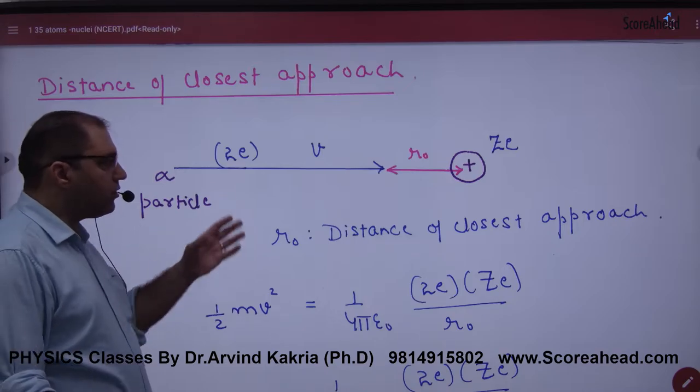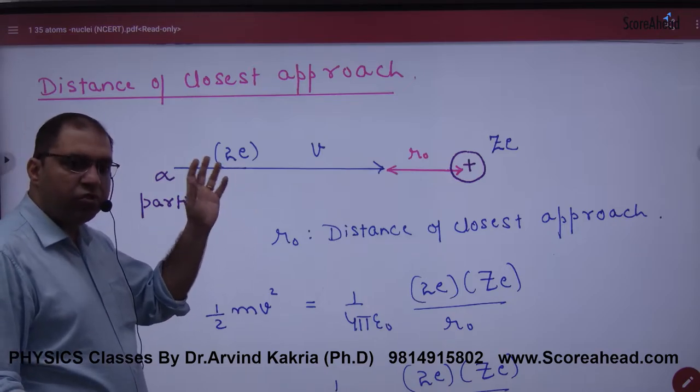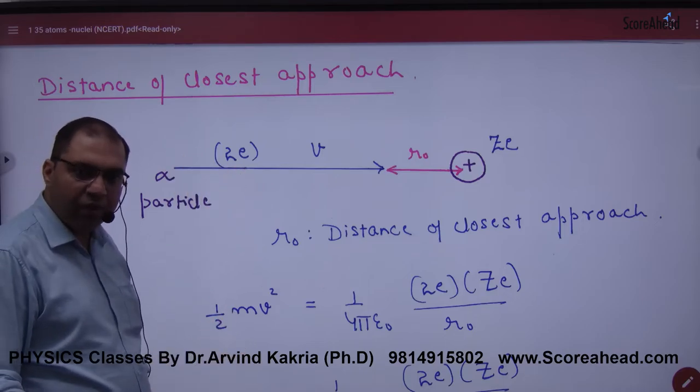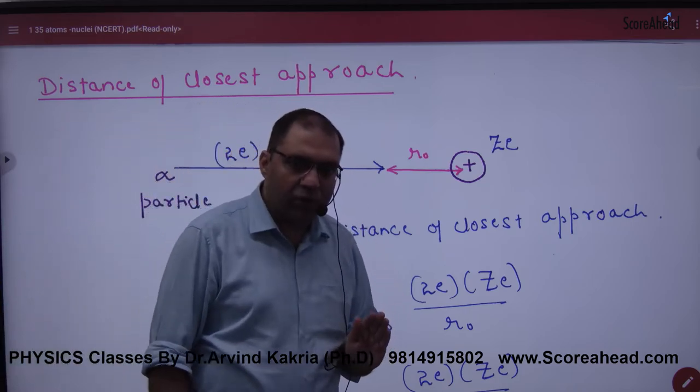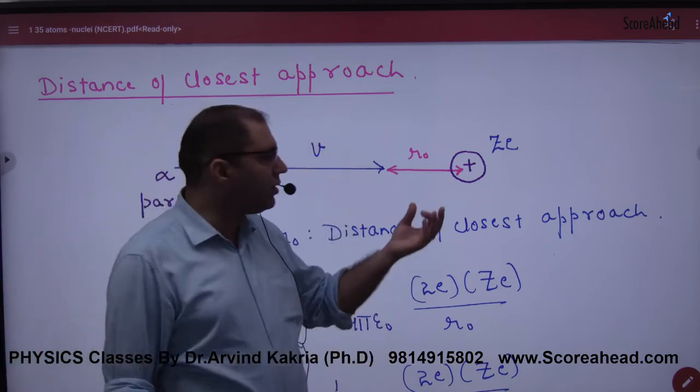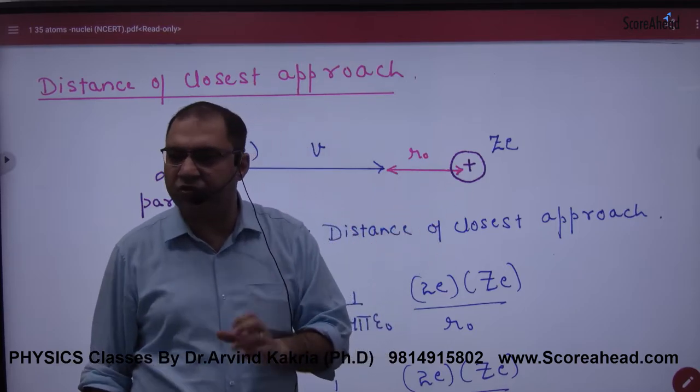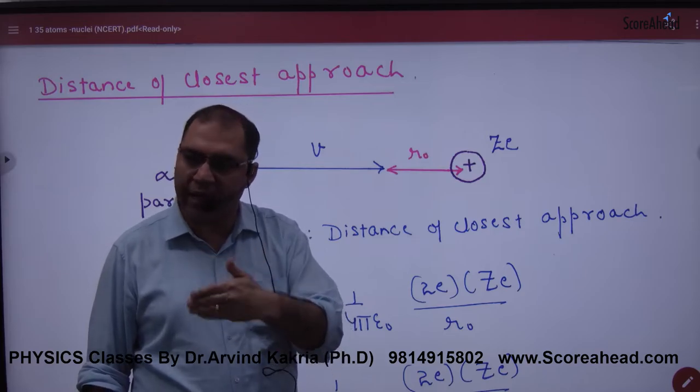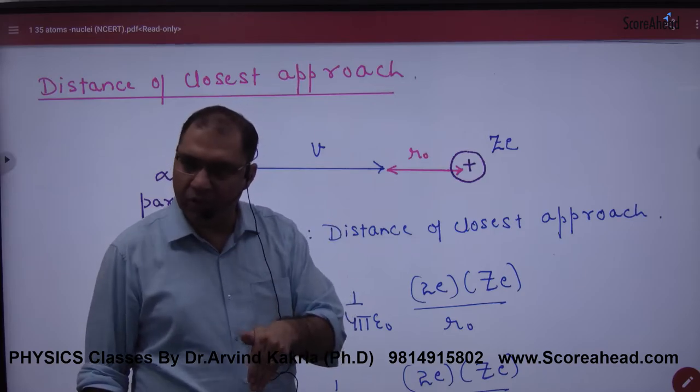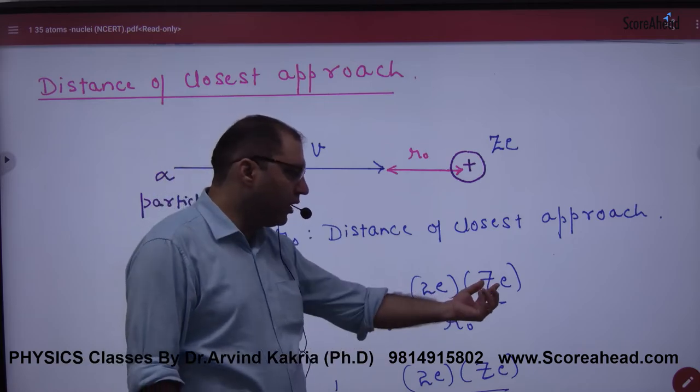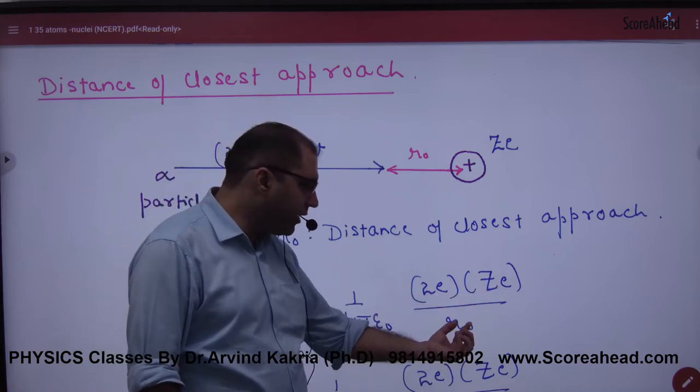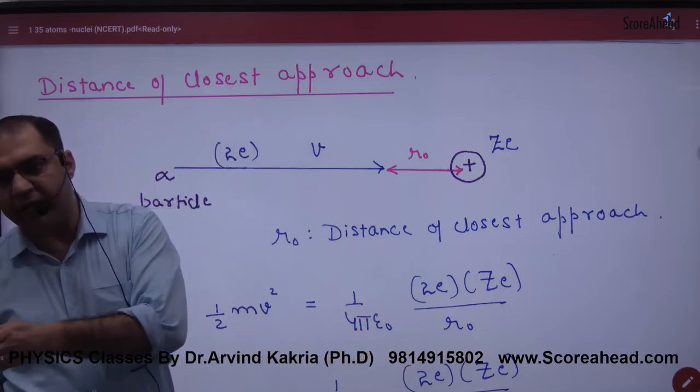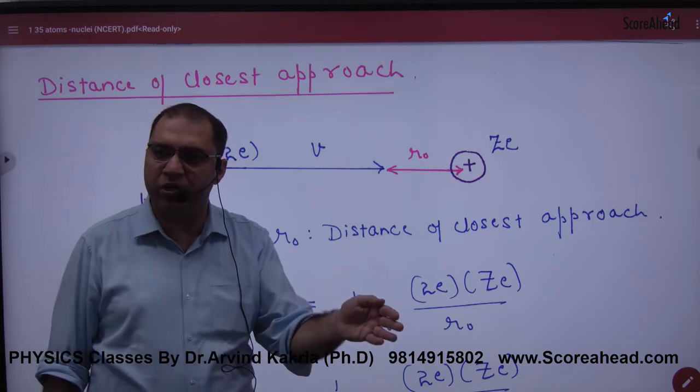How much value is coming? When some alpha particle comes with kinetic energy, which is half mv square. So when it comes here, it stops. The kinetic energy is over. And what develops between these two? Electrostatic potential energy develops. So electrostatic potential energy, what was the formula? 1 by 4π epsilon naught, Q1 Q2 by R. So Q1 and Q2, one charge is 2E, one charge is ZE. And what is the distance between them? R-naught. So we will say the kinetic energy will convert to electrostatic potential energy.